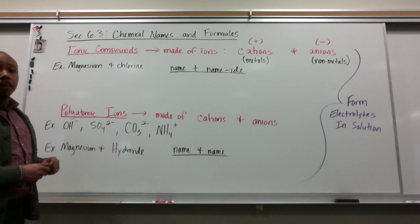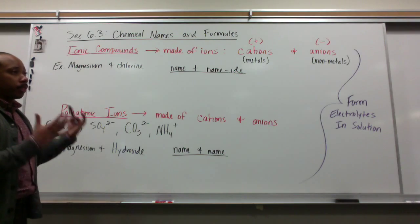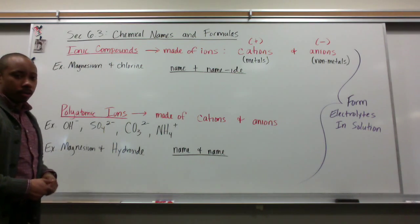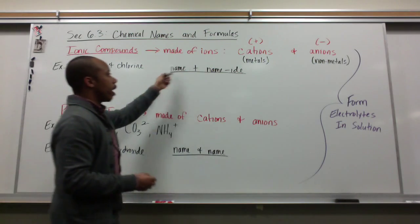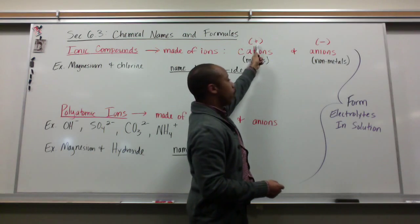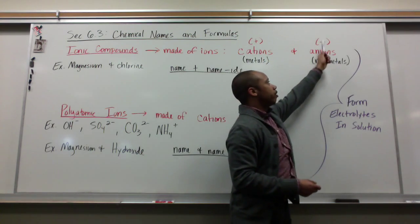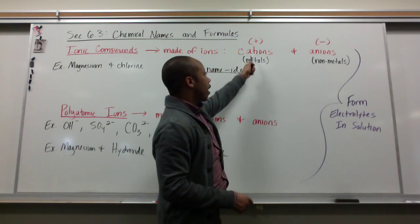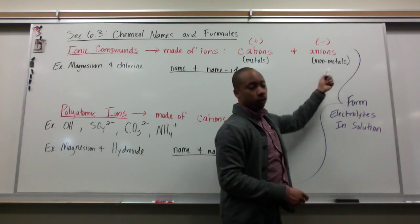When we're naming different compounds, we have different methods. The first one we'll talk about is naming ionic compounds. Ionic compounds are made of ions, cations, and anions. Cations are positively charged atoms. Anions are negatively charged atoms. Cations are usually metals, and anions are usually non-metals.